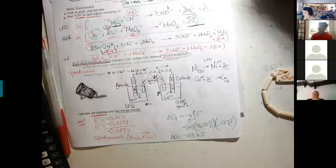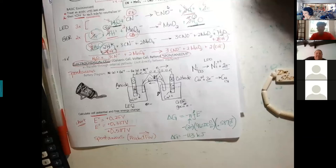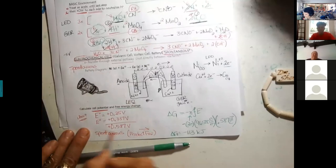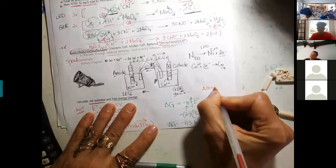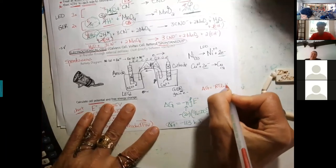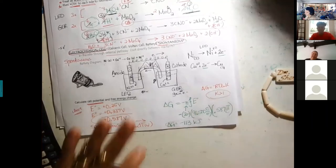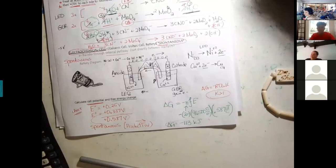If we then solved for K - what kind of K value would I find? If it's product favored, the K has to always be greater than one. So if E is positive, delta G is negative, and then we did the last step. This is the equation: delta G equals negative RT natural log of K. If we solved for K, K would be greater than one. Be careful - there are negatives in both of these delta G equations because of that weird thing that happens with free energy.